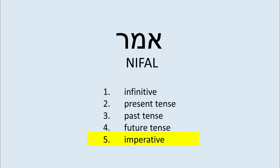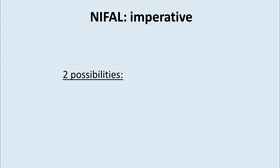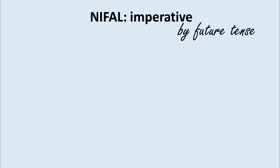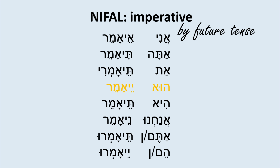Now we come to the imperative. You have two possibilities for 99% of verbs: you use the future tense, or you use what I call the grammatically correct imperative. If you use the future tense, you just take what we already had and identify the person you need — you male, you female, you guys male or you guys female.